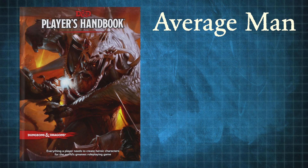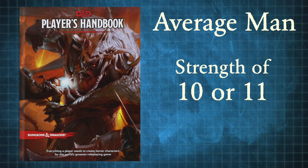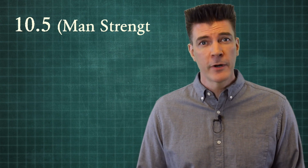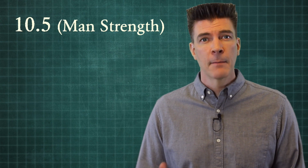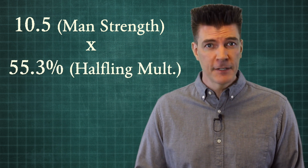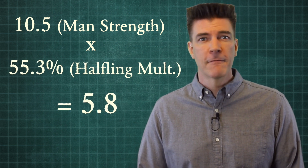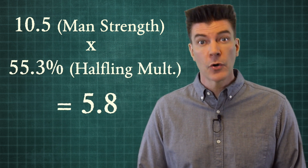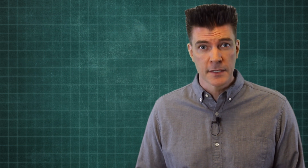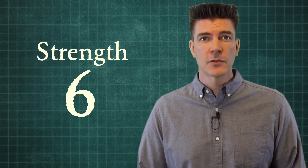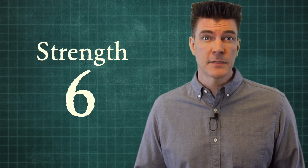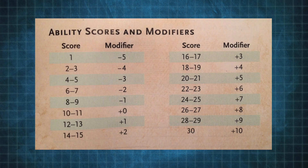Now the fifth edition player's handbook says that the average person has a strength of between 10 and 11. So if we split the difference and make it 10.5, and multiply that by the same 55.3%, we end up with a number of 5.8, or about 6. So a halfling's strength is going to be about 6, if it's an average halfling.